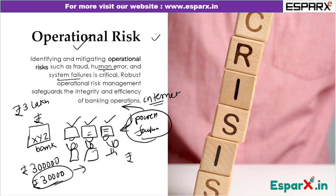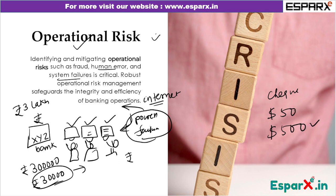Similarly, due to wrong entry in a checkbook or a typing mistake, you might have provided $500 to someone when you were only supposed to provide $50. Maybe you were busy on your phone while entering and made a human error. These are operational risks, and managing them is also very important.